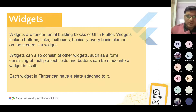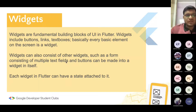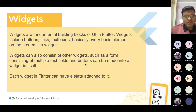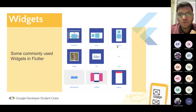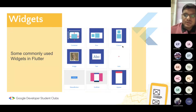In Flutter, everything is a widget. A button can have text in it. If you take an example of a form, it contains multiple text fields and buttons — all the text fields are widgets, buttons are widgets, and the form itself is a widget. Each widget has some state attached to it. Some examples of widgets we use in Flutter are: Container, Row, Column, Image, Text, and Icon.